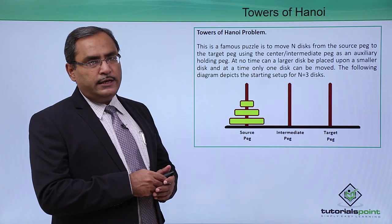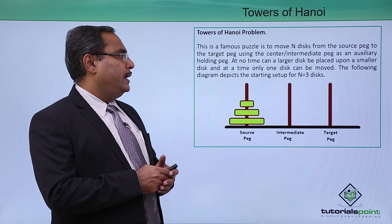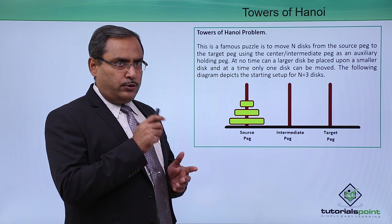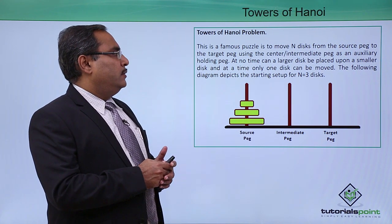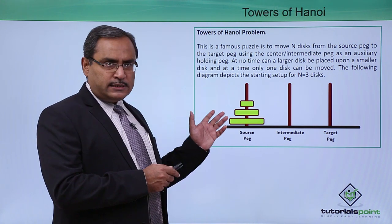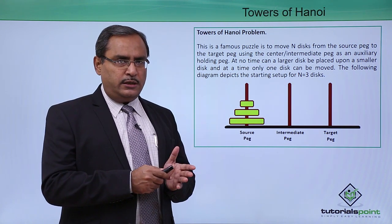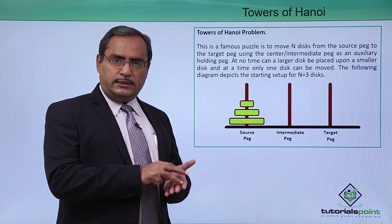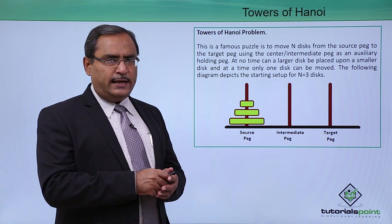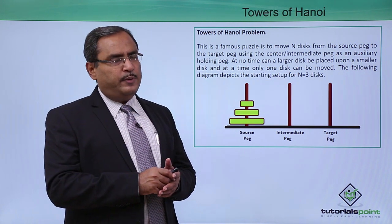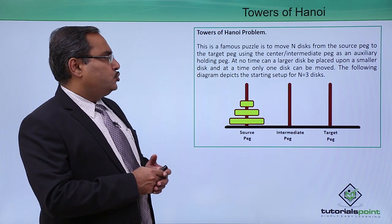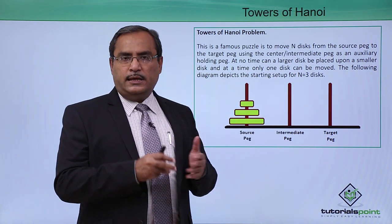There are two constraints: at no time can a larger disk be placed upon a smaller disk — that is the first condition. The larger disk cannot be placed on a smaller one. The second condition is that at a time only one disk can be moved from one peg to another peg.